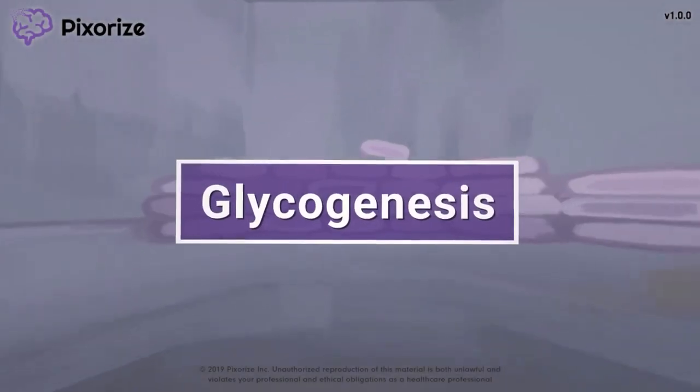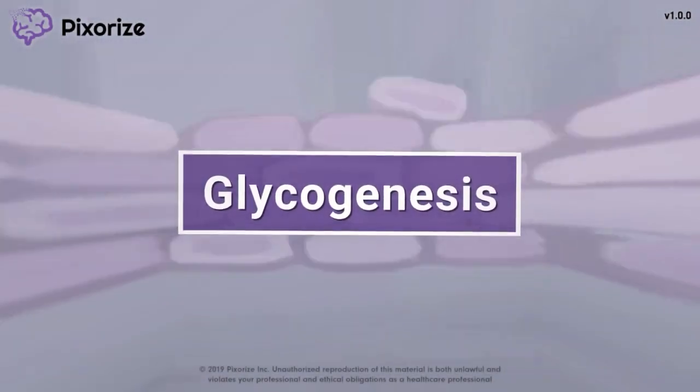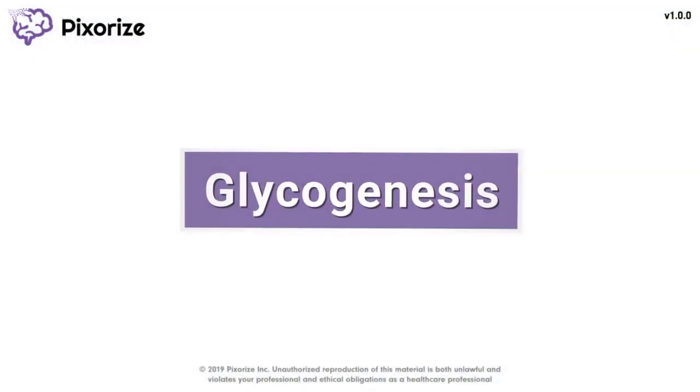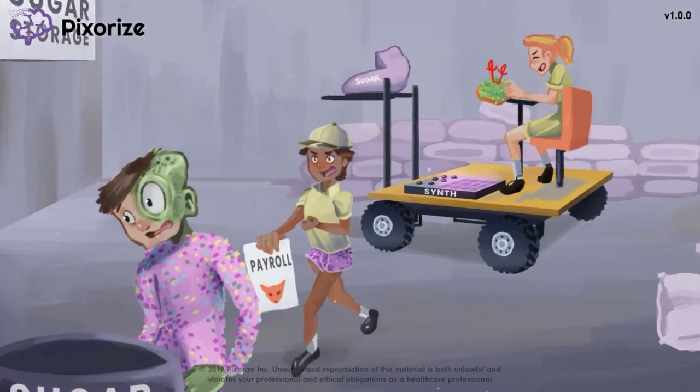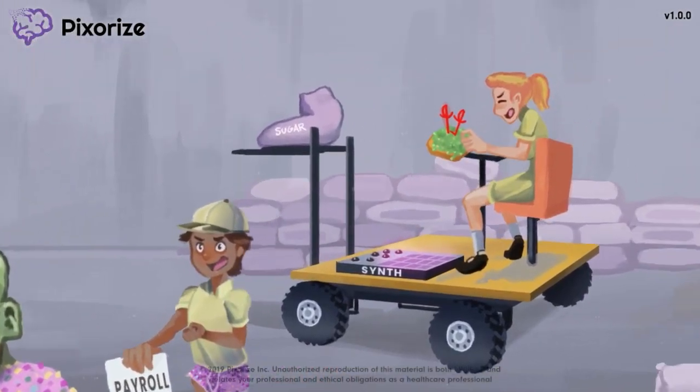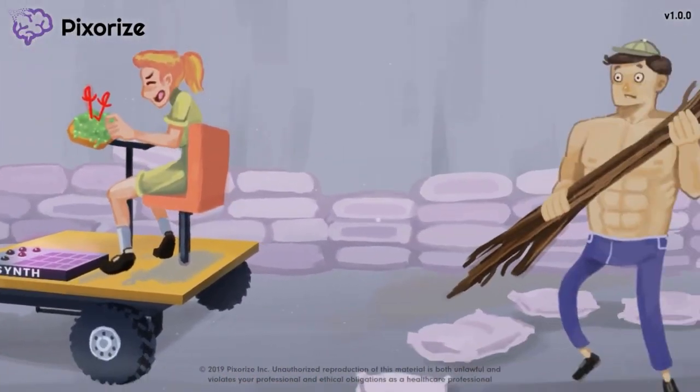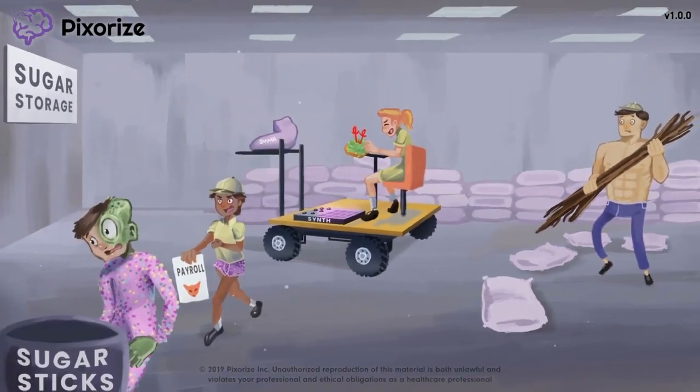Glycogenesis is the biochemical pathway that produces glycogen, which is the body's storage form of glucose. In this video, we'll present a visual mnemonic to help you remember all of the key steps of this pathway.